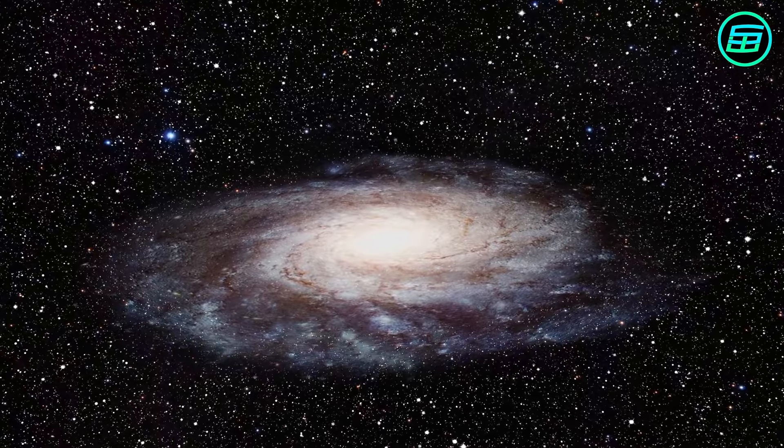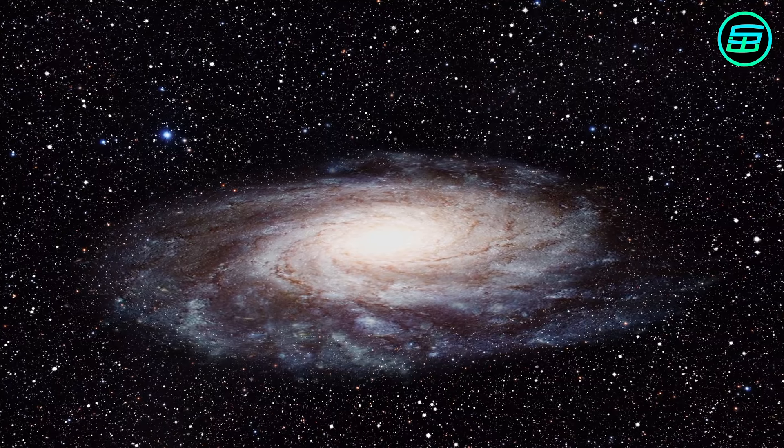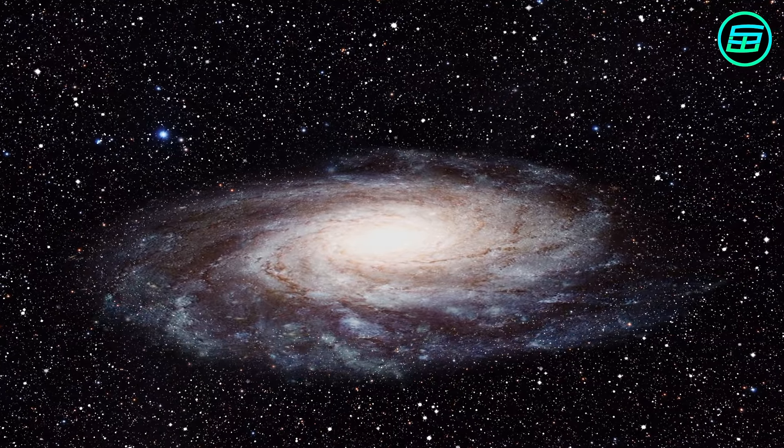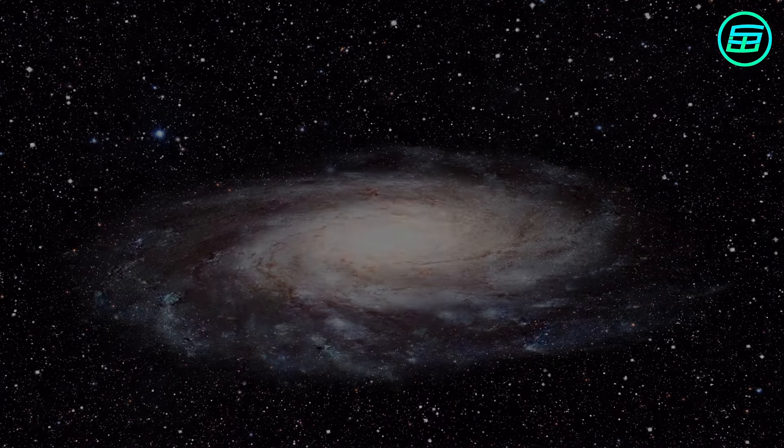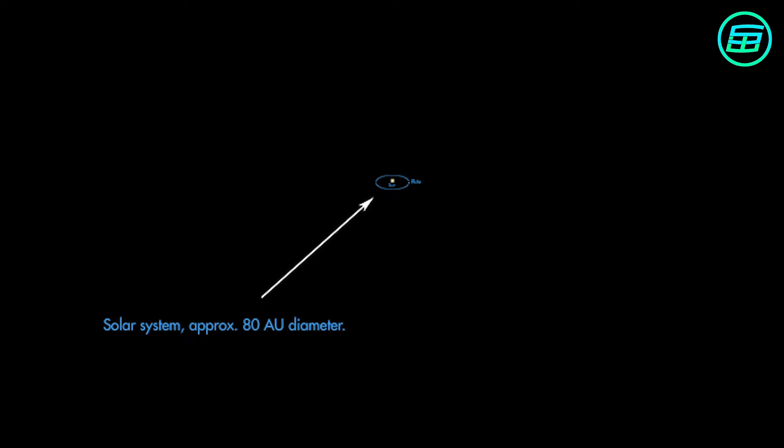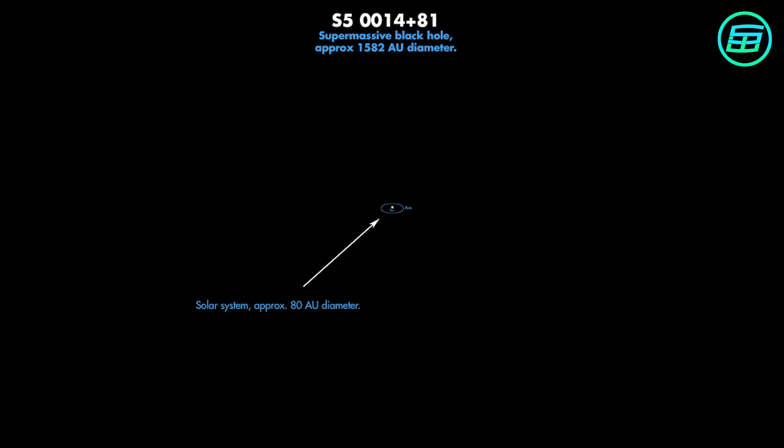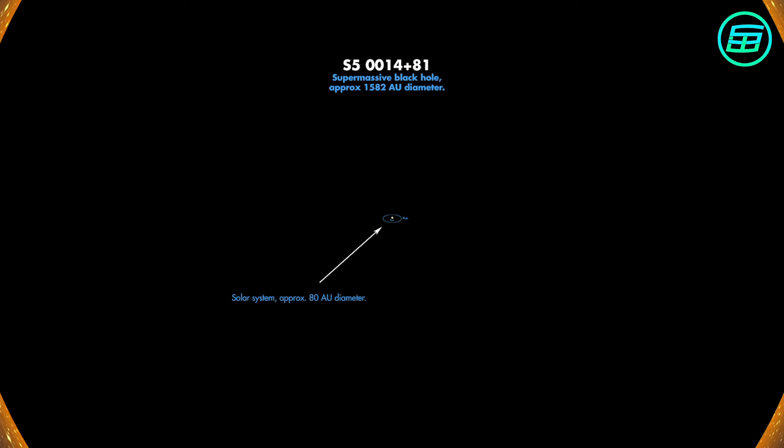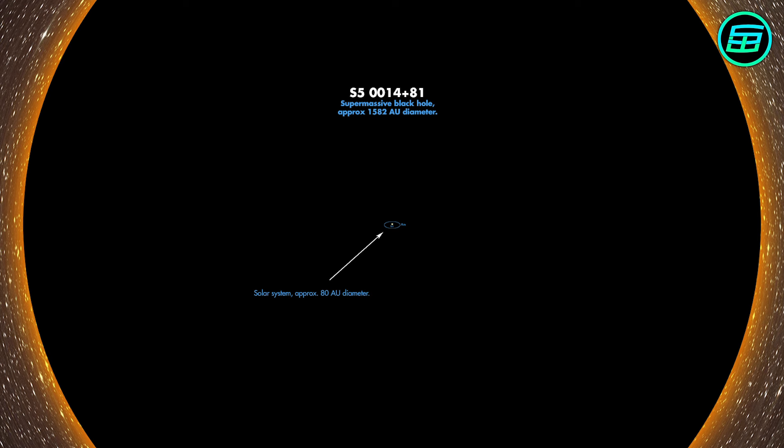Supermassive black holes lie at the centers of galaxies, including our own Milky Way. One of the largest known lies at the heart of a remote luminous galaxy called S50014 plus 81. It's 40 billion times the mass of the sun and has an event horizon, beyond which you'd have to travel faster than light to escape, that's many times bigger than our solar system.